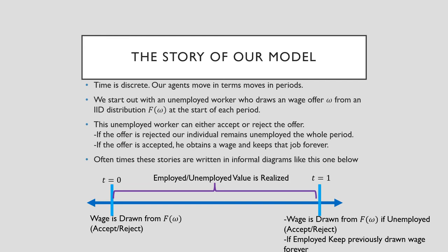So this is the story of our model. Time is discrete. Our agent moves in terms of periods. We start out with an unemployed worker who draws a wage offer omega from an IID distribution F(omega) at the start of each period. This unemployed worker can either accept or reject the offer. If the offer is rejected, our individual remains unemployed for the whole period. If the offer is accepted, he obtains a wage and keeps that job forever.